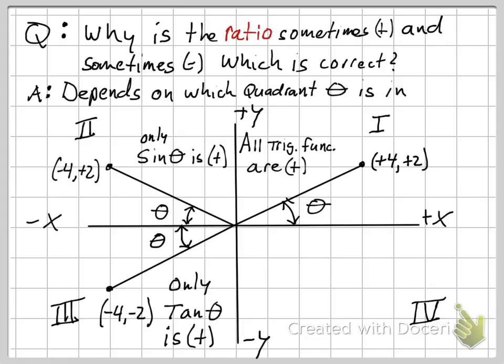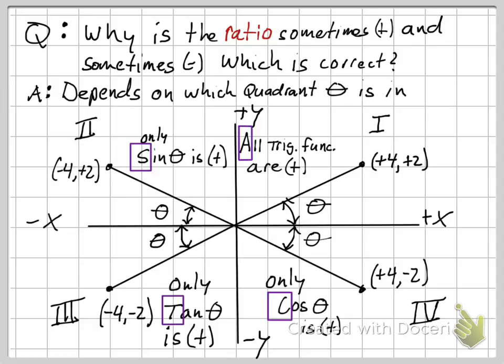Likewise, the third quadrant, only the tan function will be positive. Fourth quadrant, only the cosine function will be positive. We memorize this ASTC, a smart trig class. And that tells us which functions are positive in which quadrant.